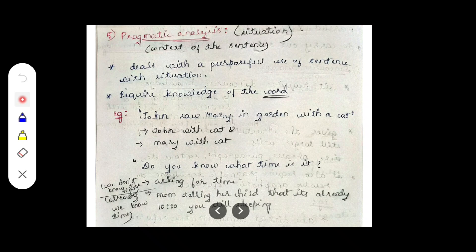One more example relevant to daily life: 'Do you know what time is it?' This sentence can have two situations. The first situation is that a person does not know the time and is genuinely asking for the time — they are asking 'do you know what time is it?' without knowing it themselves.